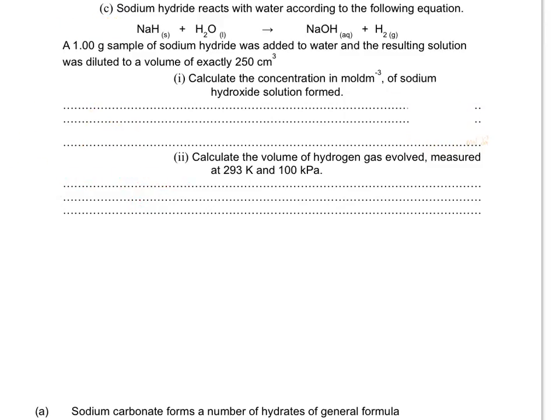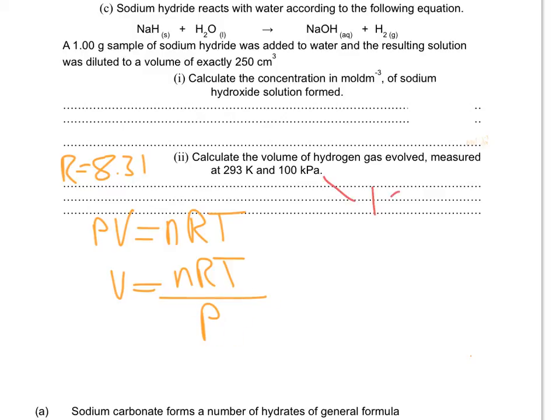The next question is asking for the volume of hydrogen gas evolved. They give you the temperature and pressure. We've already got the moles. It's a simple case of converting to pascals using the moles, along with R equals 8.31. PV equals nRT. Rearrange that for V. That becomes V equals nRT over P. Doing the conversion, we times by 1000 to get pascals, so 100,000.